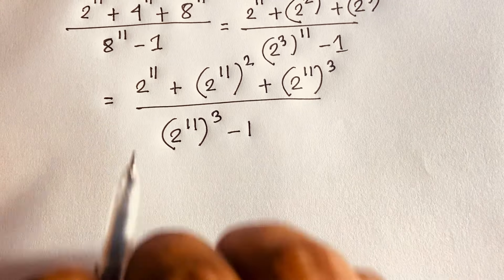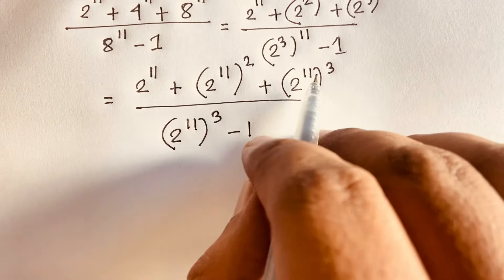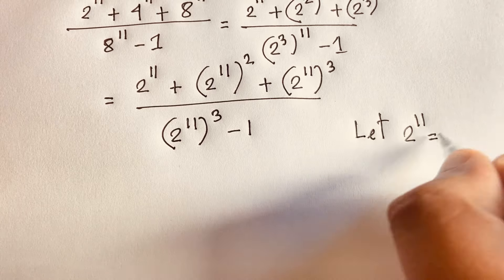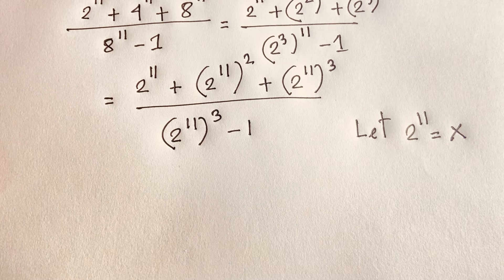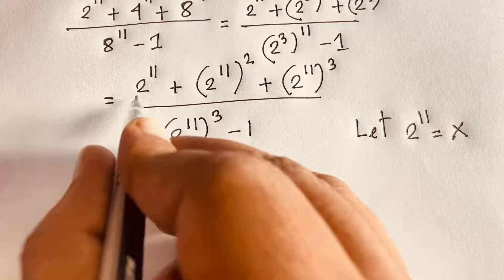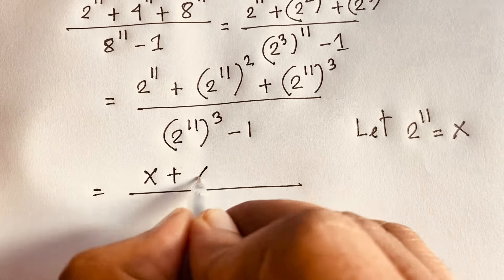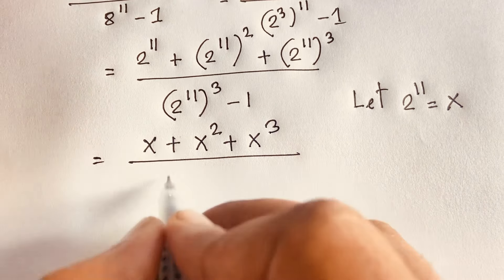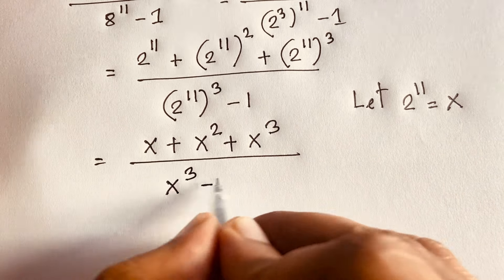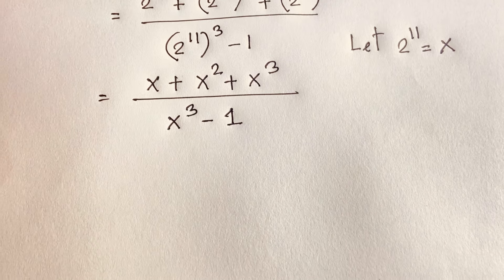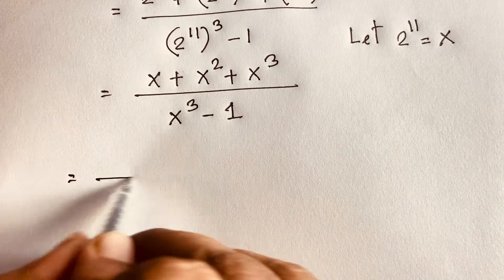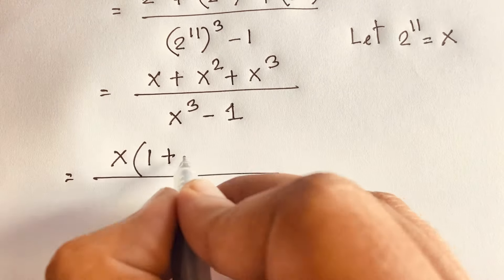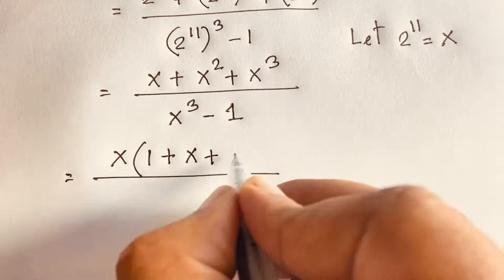Now look — 2 to the power 11 is common throughout. So let x equal 2 to the power 11. The numerator becomes x plus x squared plus x cubed, and the denominator is x cubed minus 1. Factoring x from the numerator gives x times (1 plus x plus x squared), and x divides through.